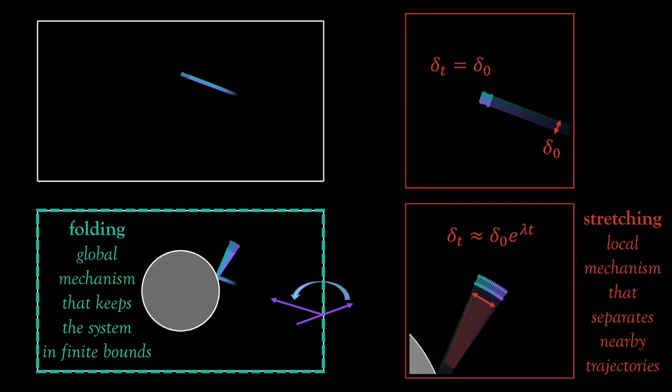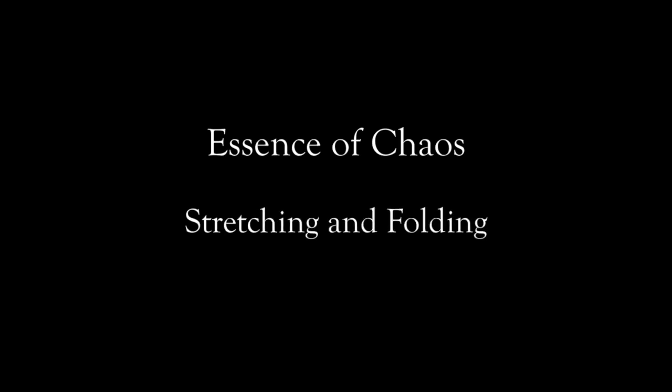and for the billiard example here, this is just the reflections at the outer wall. So, there you have it. That's actually it. The essence of deterministic chaos is stretching and folding.